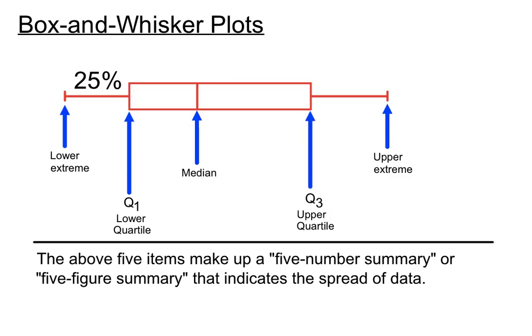The distance between the lower extreme and Q1 contains 25% of the scores. So if we have the lower extreme and the Q1 figure, that would contain roughly 25% of the scores, almost exactly actually.